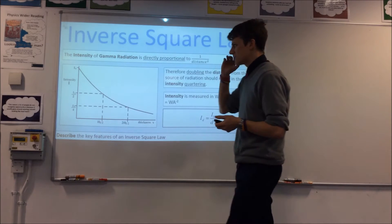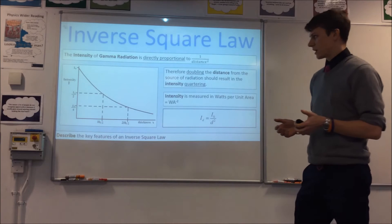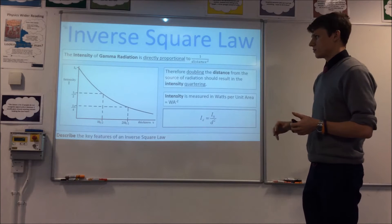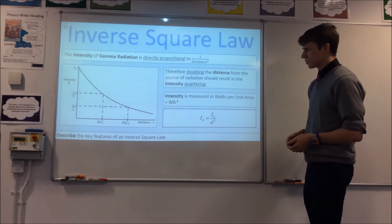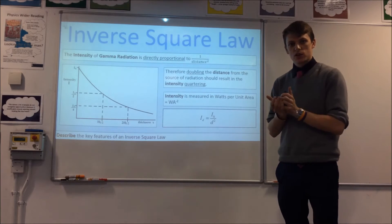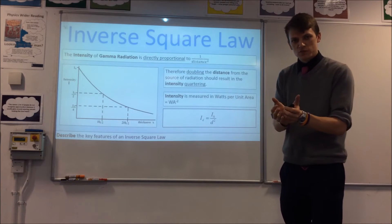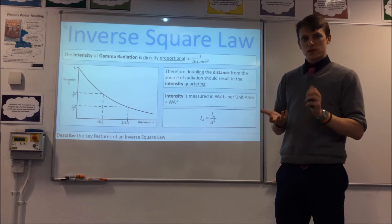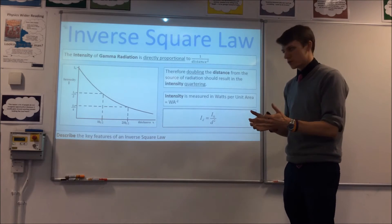What this law says is essentially the intensity of gamma radiation, or any other electromagnetic radiation for that matter, is directly proportional to 1 over the distance squared — or sometimes expressed as inversely proportional to the distance squared. Intensity is essentially the amount of power delivered per area, so if you have a detector with a fixed area, as you move it further from your source the intensity measured would decrease.